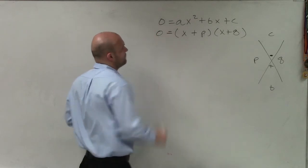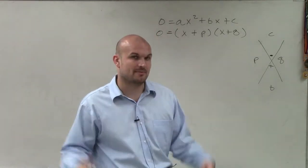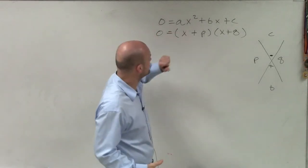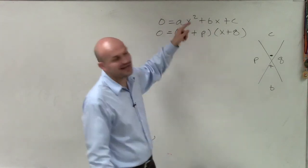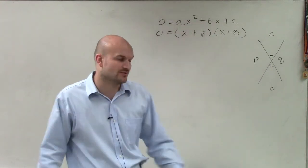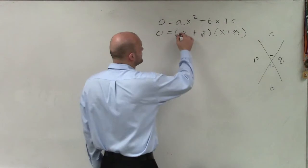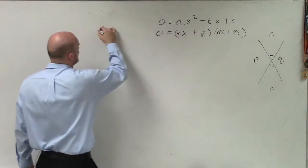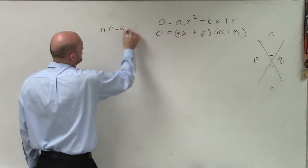Then, once we have it factored in that format, we can now apply the zero product property. The problem when a is not equal to 1 is x times x does not give you ax². That gives you x². So now, we have to account for these two other values, where m times n is going to equal a.